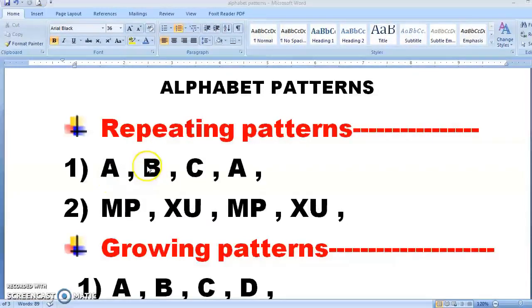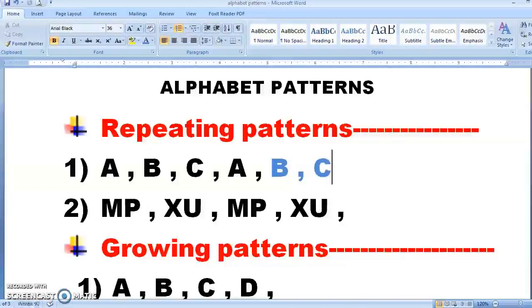A, B, C, A. So what will be the next one? B. And what will be the next one? C. And what will be the next one? Yes, of course A. And this pattern will keep on going.